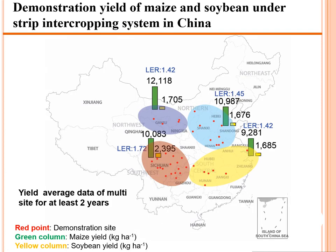Another demonstration of maize and soybean strip intercropping yield results across China shows red points indicating demonstration sites, green columns showing maize yield, and yellow columns showing soybean yield. Yield average data from multi-site trials of at least two years show that almost every location achieved an average LER higher than 1.4, significantly higher than other intercropping systems in the world.